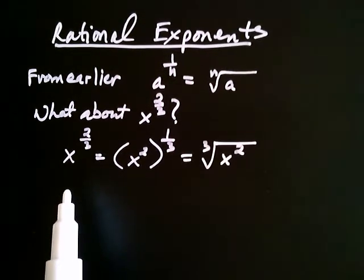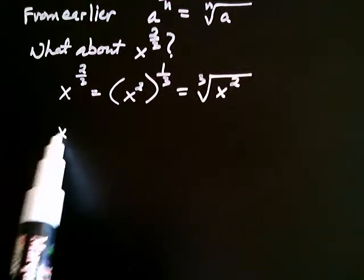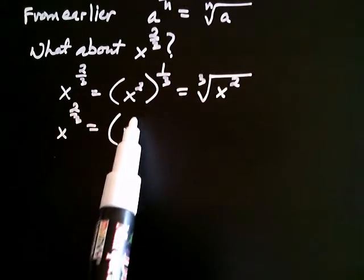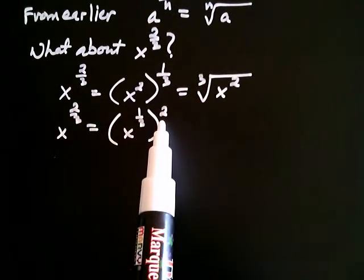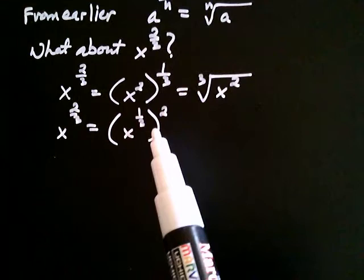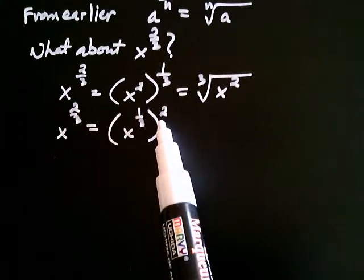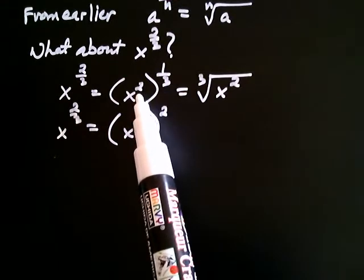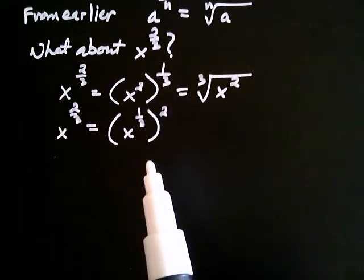Now, it turns out there's another way of thinking about it as well. We know that multiplication is commutative. You can think of x to the 2 thirds as x to the 1 third raised to the second. After all, isn't 1 third times 2 the same thing as 2 times 1 third? The fact that multiplication is commutative means I can write x to the 1 third squared, because I multiply 1 third and 2 to get 2 thirds, and I can also write x squared to the 1 third — all I've done is reordered the 2 and the 1 third. In both situations you're multiplying the exponents.